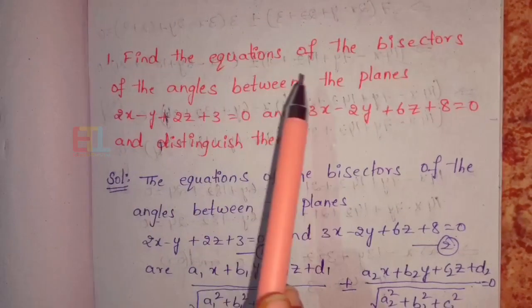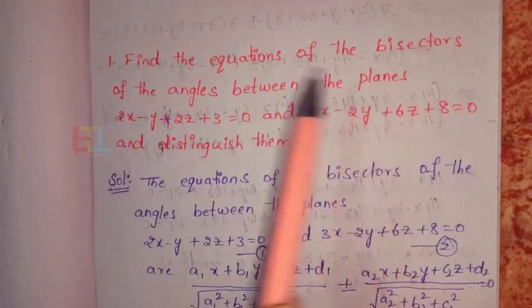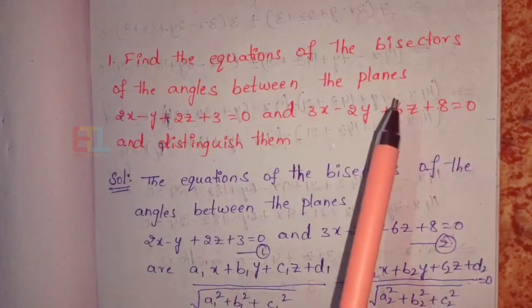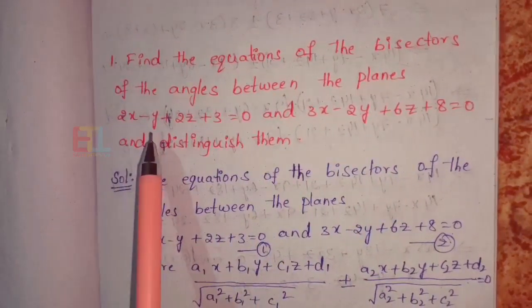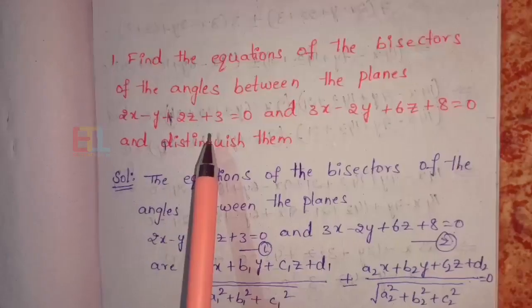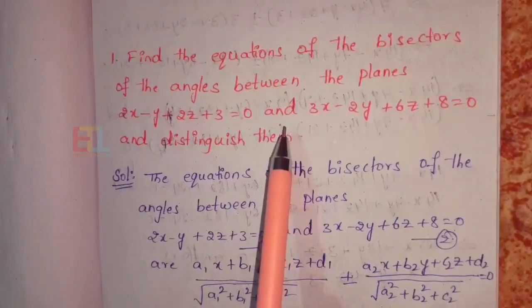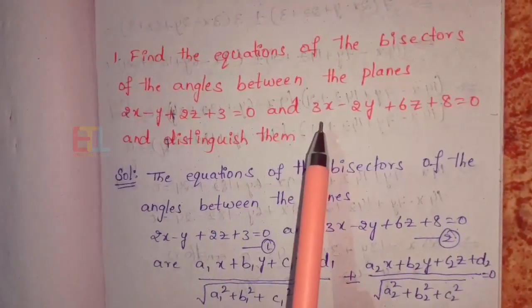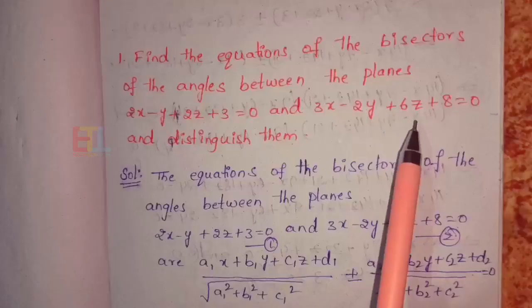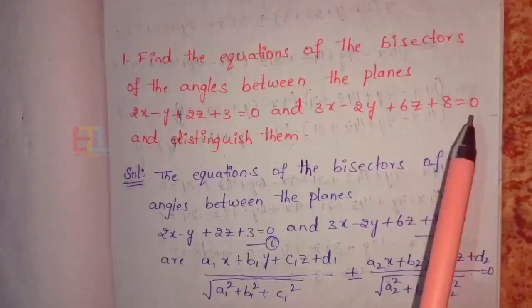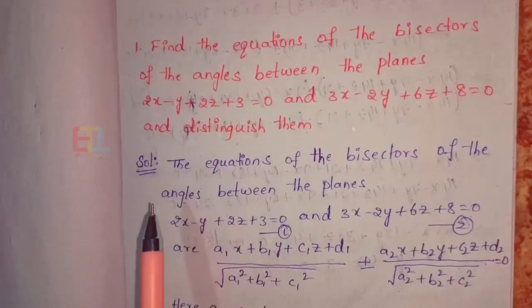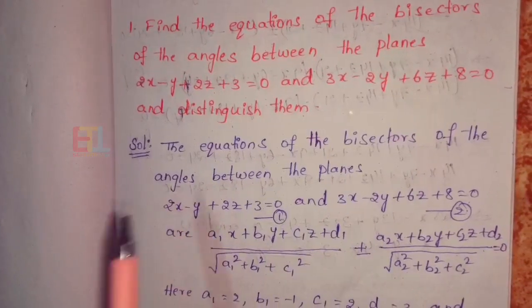Find the equations of the bisectors of the angles between the planes 2x minus y plus 2z plus 3 equal to 0 and 3x minus 2y plus 6z plus 8 equal to 0, and distinguish them.